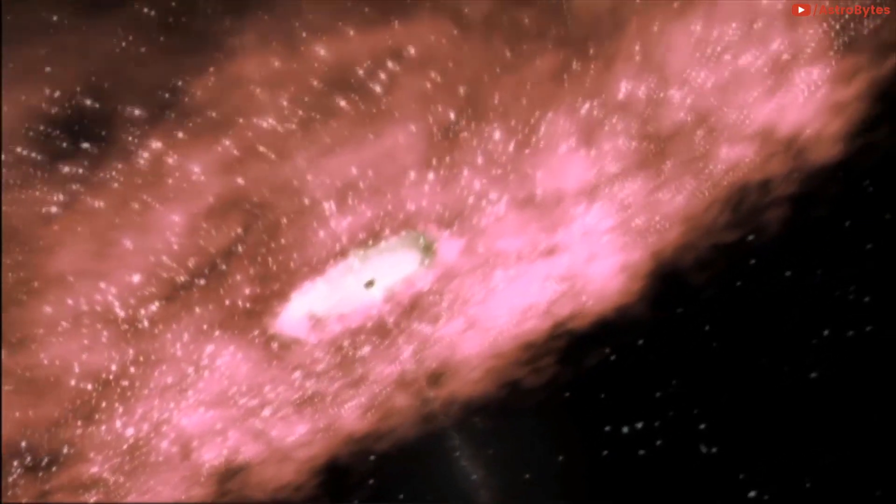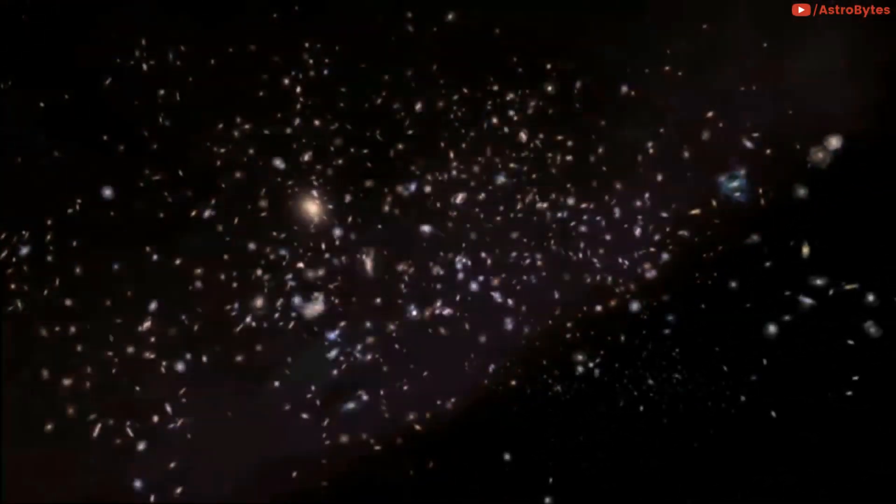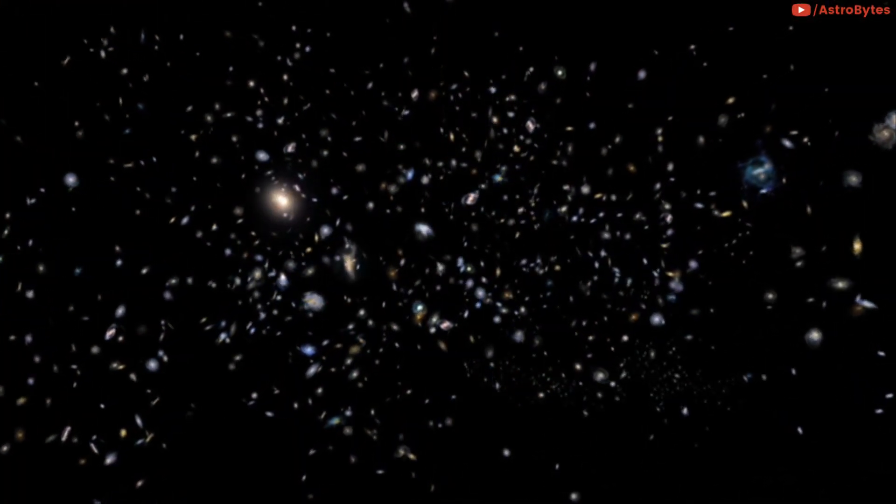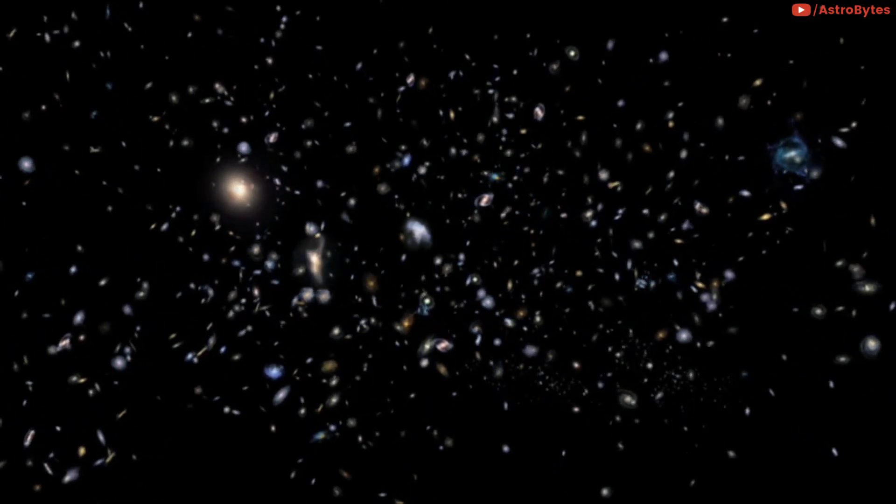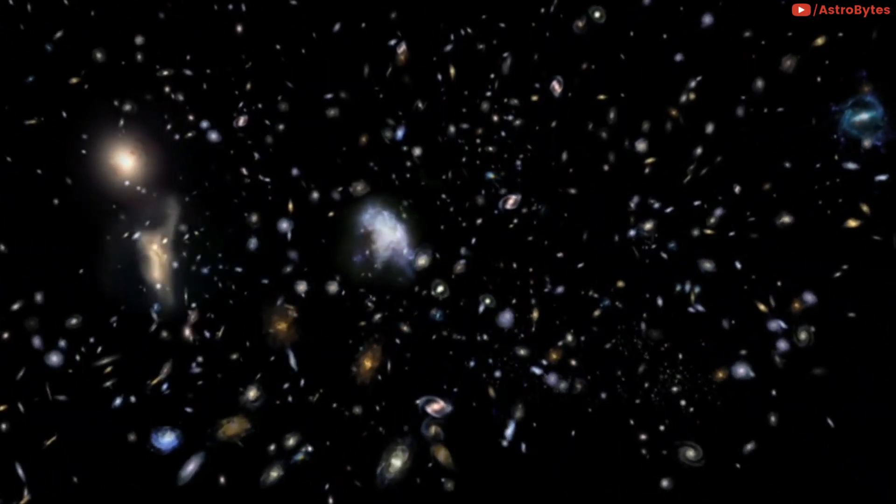Scientists had long thought there was something strange about the Ophiuchus galaxy cluster, which is a giant aggregation containing thousands of individual galaxies, intermingled with hot gas and dark matter.